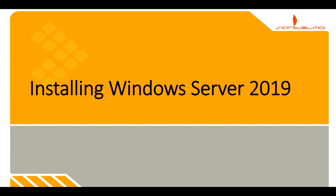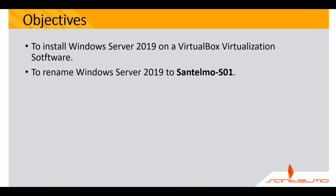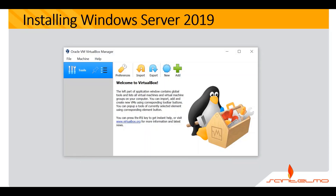Welcome to Santelmo's Windows System Administration series. This video will demonstrate how to install Windows Server 2019 on VirtualBox virtualization software. Our objectives are to install Windows Server 2019 on VirtualBox, and then rename the server to Santelmo S01, which will be our first server configured as part of this series.